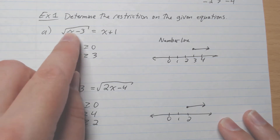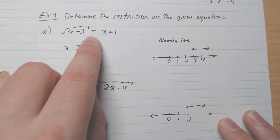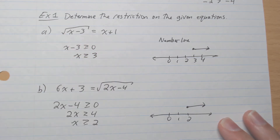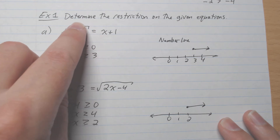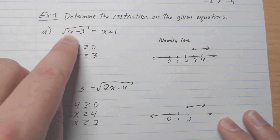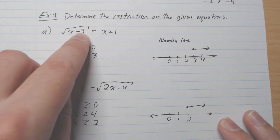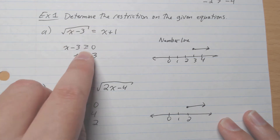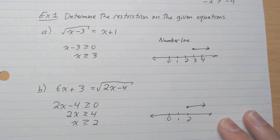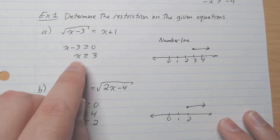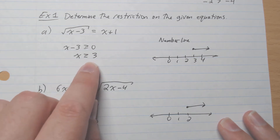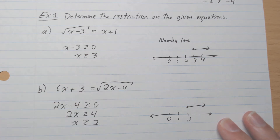Here we have root(x minus 3) equals x plus 1. The only restriction is what's underneath the square root, so x minus 3 must be greater or equal to 0. Adding 3 to both sides, x is greater or equal to 3. That is the restriction.